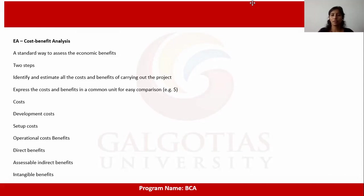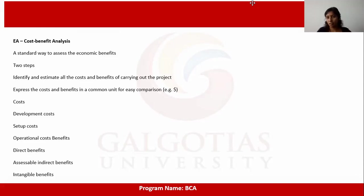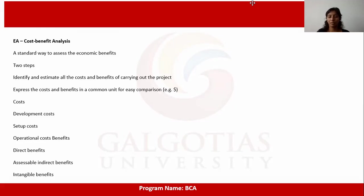The costs include development costs, setup costs, and operational costs. The benefits include direct benefits, indirect benefits, and intangible benefits. Development costs cover expenses like salaries needed to develop the software, as well as buying hardware and software. Setup costs and operational costs are also accounted for under this framework.